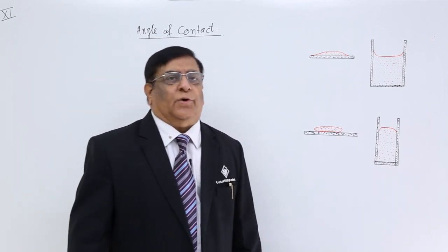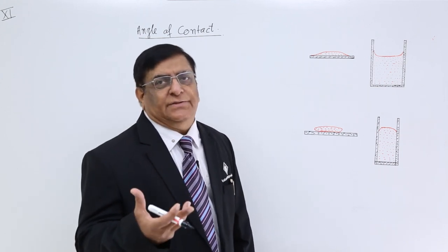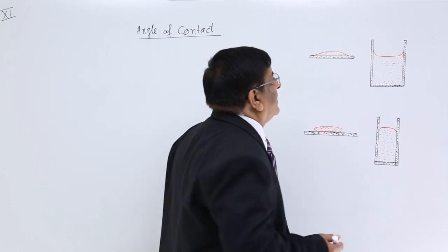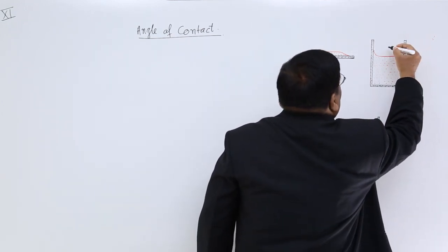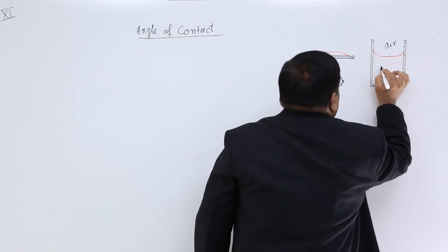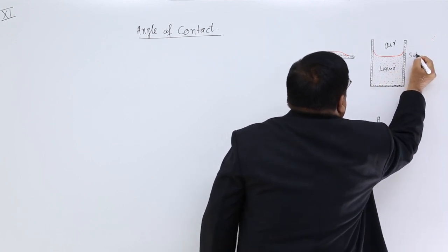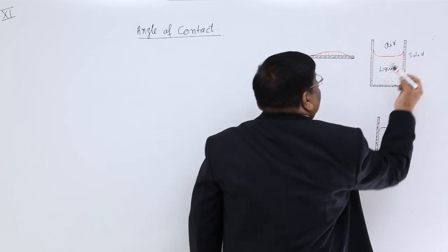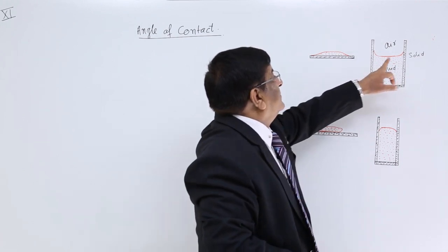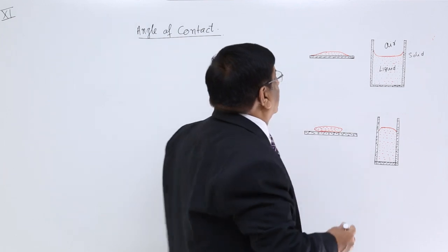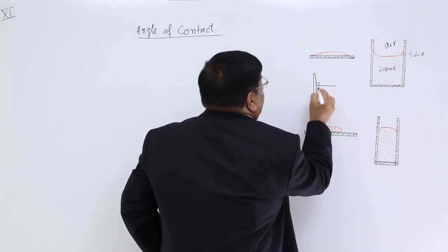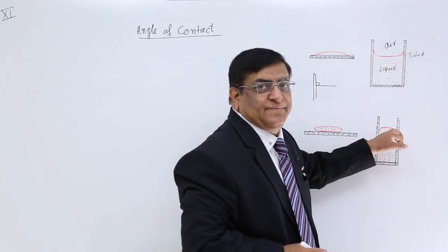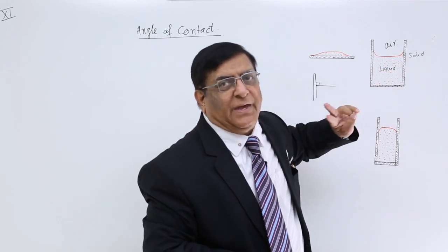When there is a contact of different types of molecules — liquid, solid, and also air — like when we keep liquid in a solid jar, there is contact of liquid molecules, solid molecules, and gas molecules. We see that this contact is not a plain surface. Where the contact is, the surface is not plain; we find that the surface either rises up or comes down. This is what we see with most pairs of liquids and solids.